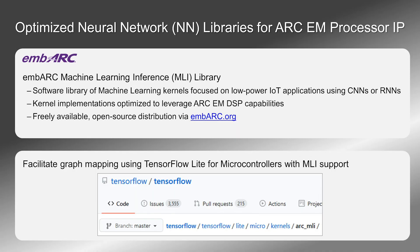In order to take advantage of our EM hardware, we need a software library that provides NN primitives and has been optimized to work specifically for the EM. The software experts here at Synopsys have implemented the Machine Learning Inference library. This is a library of NN kernels, and it includes typical functions needed for both convolutional and recurrent neural networks. This carefully crafted C++ code allows us to achieve high-performance NN on deeply embedded processors like the EM. You can use MLI APIs directly in your application, or you can leverage our integration with TensorFlow Lite for microcontrollers in order to facilitate the mapping of your NN graph to the embedded system.